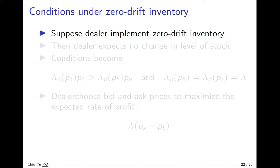Now we want to look at a special case to see how the bid-ask spread is being calculated. One way to consider is that the dealer implements a zero-drift inventory, which means they want to implement a policy where they don't want to accumulate more stock or lack stock.